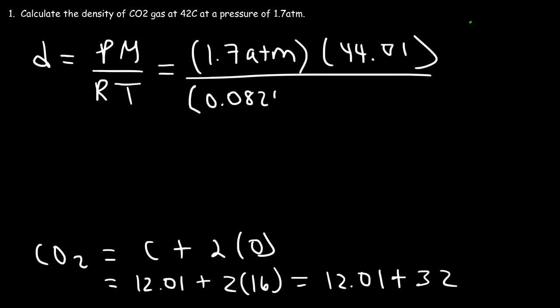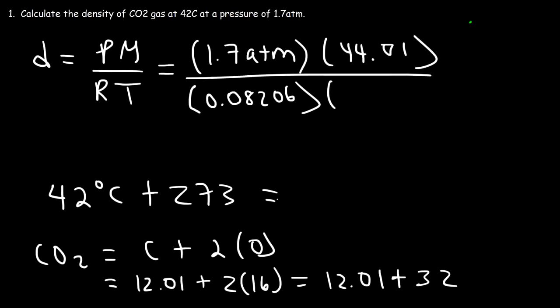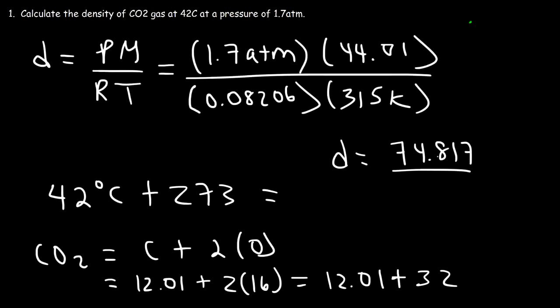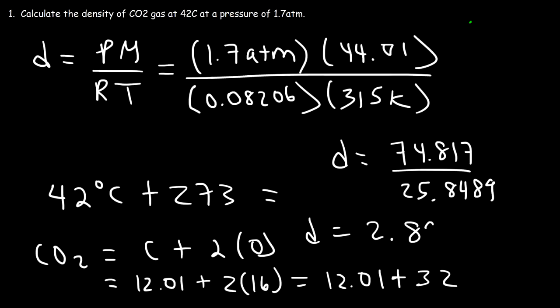Now let's replace R with 0.08206. And the temperature is 42 Celsius, but we need to convert that to Kelvin, so we've got to add 273 to it. So 42 plus 273 is 315 Kelvin. 1.7 times 44.01 is 74.817. And if you multiply 0.08206 by 315, you should get 25.8489. Now let's divide these two numbers. So the density of this gas, under these conditions of temperature and pressure, is 2.89 grams per liter.